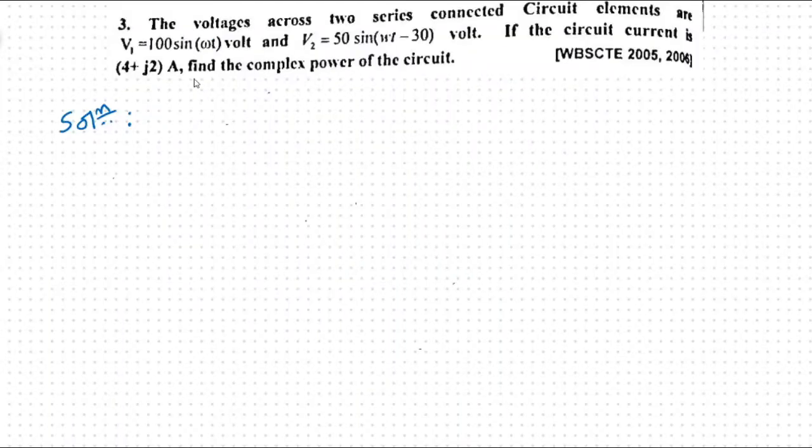Now, basically we are going to solve problem number 3 on complex power calculations in an electrical circuit. Here in the problem, it is given that the voltages across two series connected circuit elements are V1 equal to 100 sin omega t volt and V2 equal to 50 sin omega t minus 30 volt. If the circuit current is 4 plus j2 ampere, find the complex power of circuit.